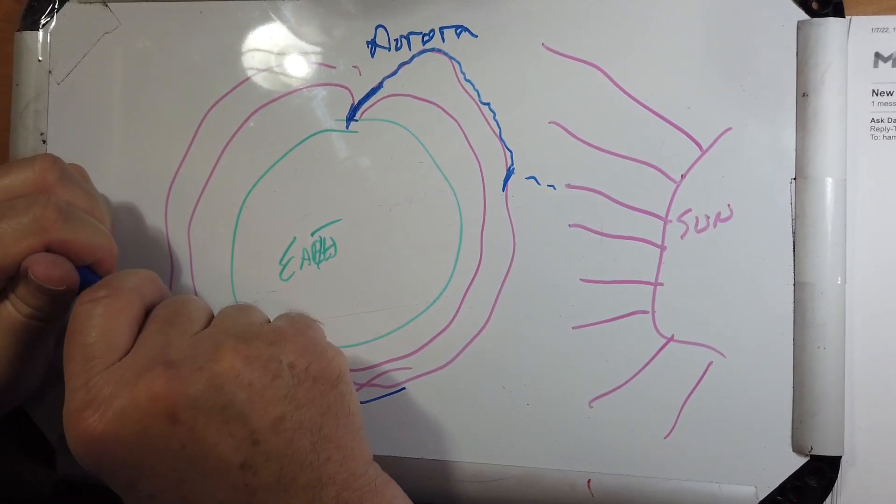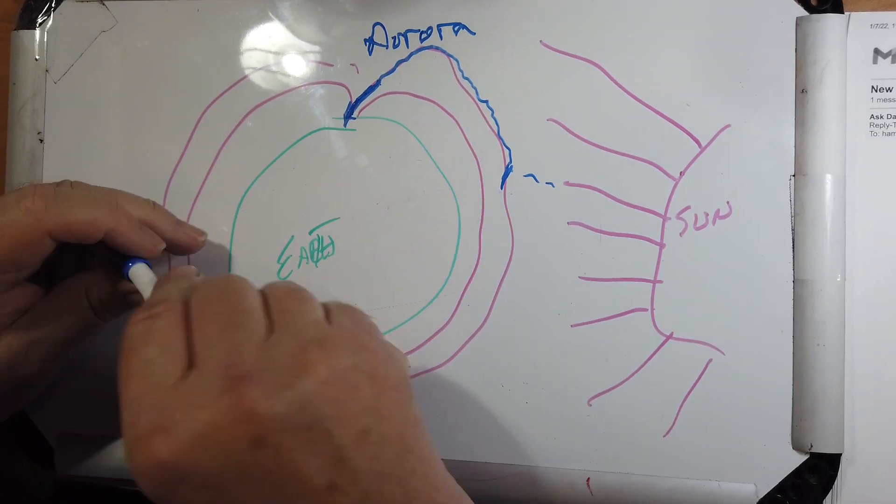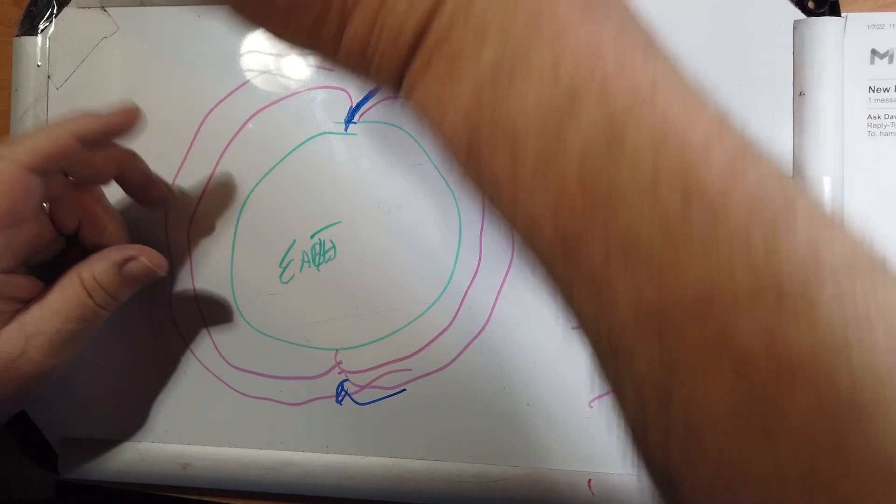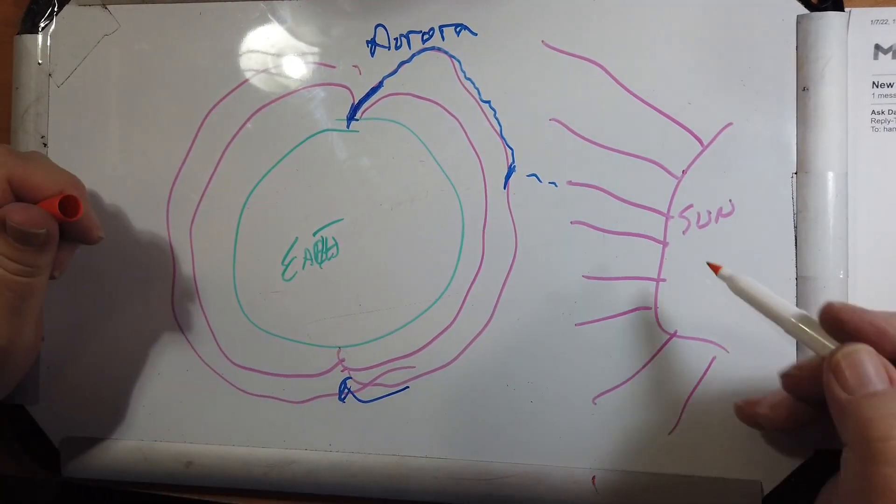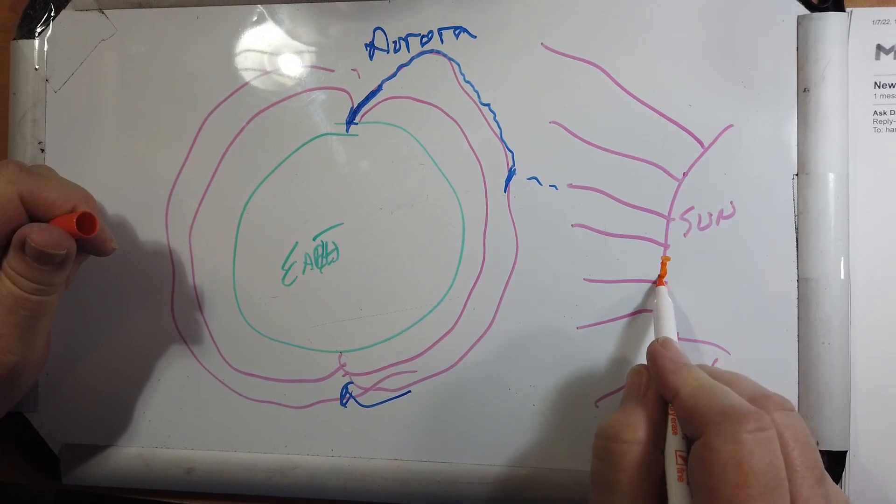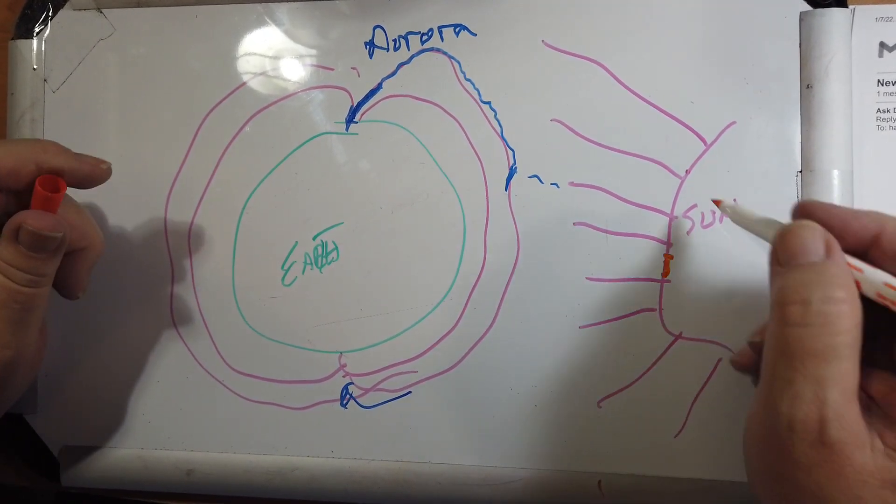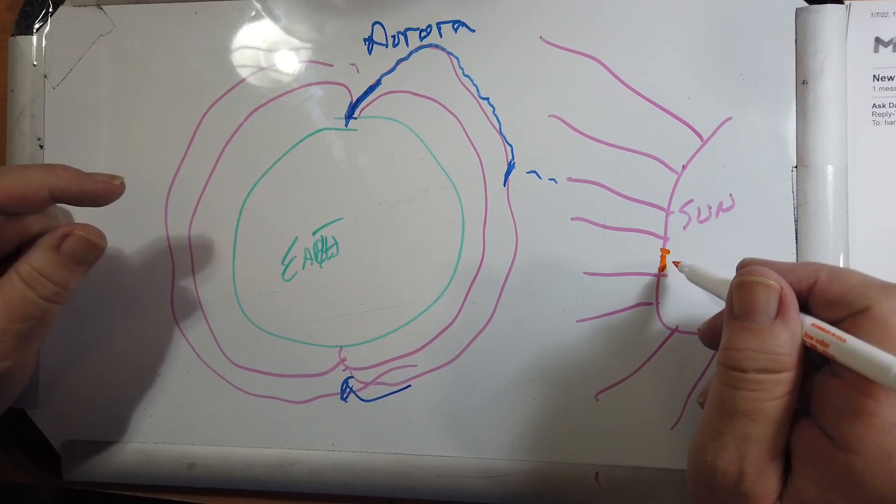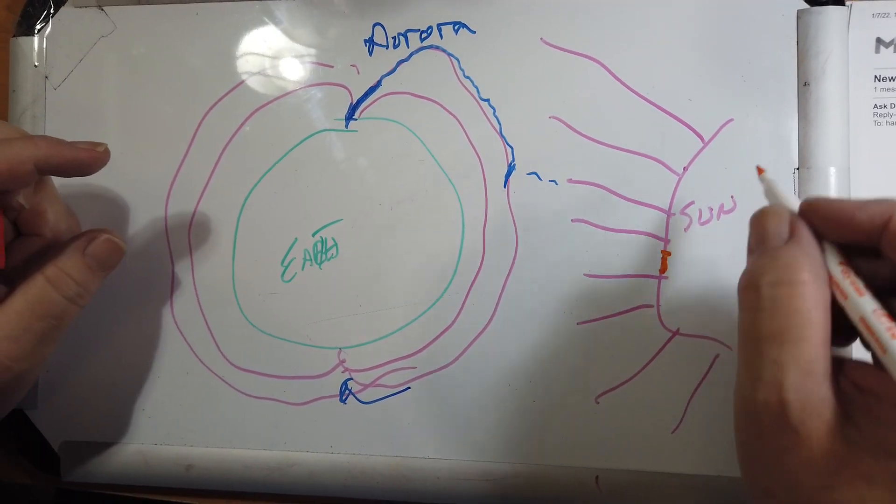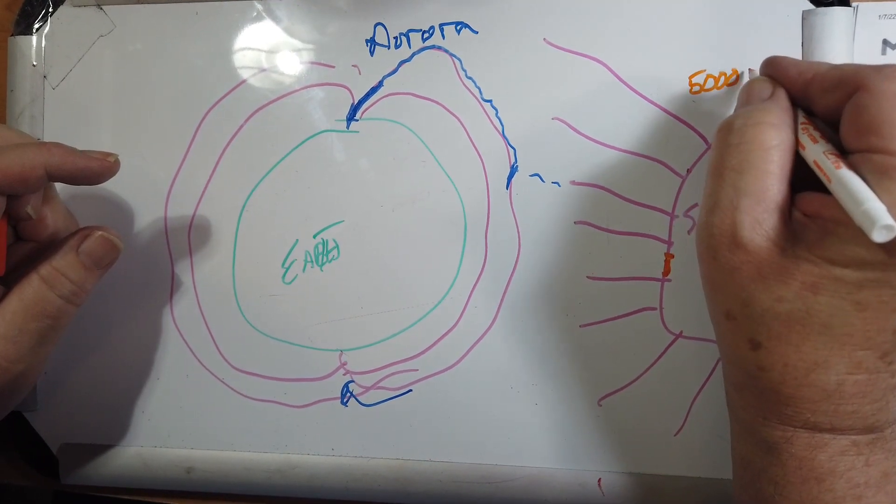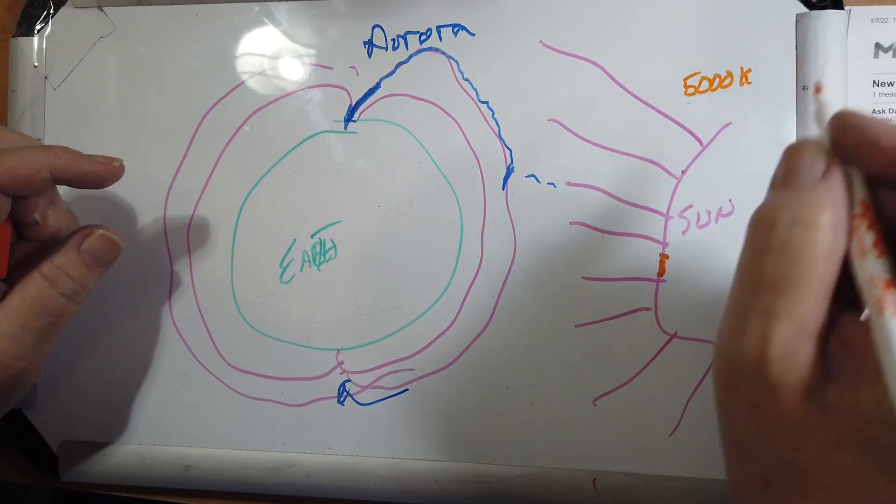I've seen very cool pictures of Saturn with the aurora showing. Now, the other thing that the sun sends out, and this is very important, we'll use orange for that, is where there are sunspots, which can be thought of as blemishes on the face of the sun. They are somewhat cooler than the surface of the sun. The surface of the sun is about 5,000 Kelvin.